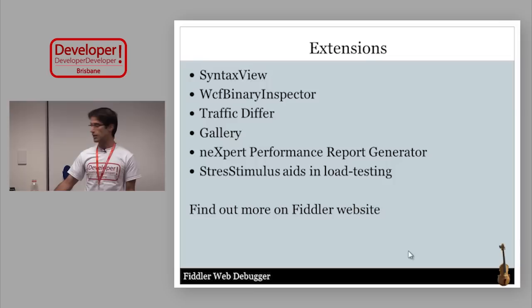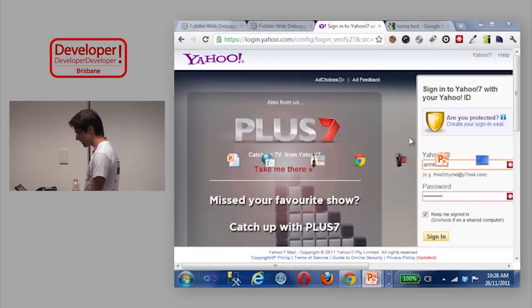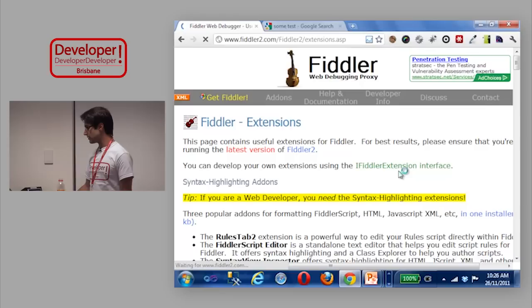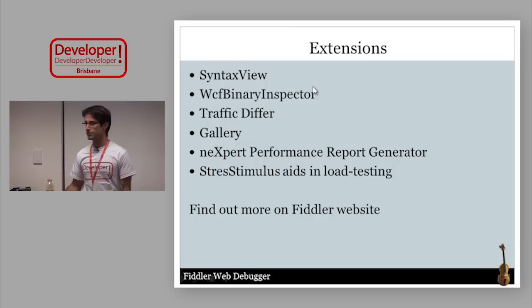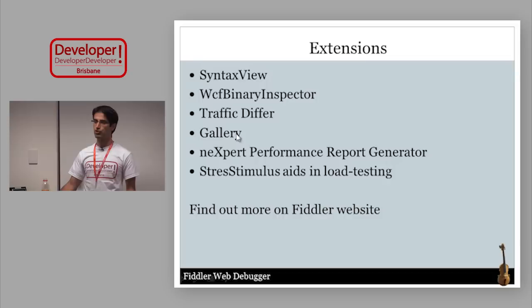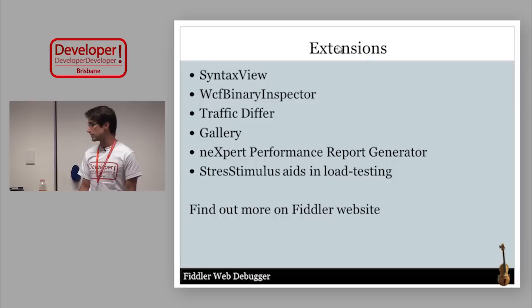Fiddler comes with many extensions and is very extensible — you can write your own or use existing ones from the Fiddler website. Notable add-ons include: SyntaxViewer for syntax-highlighted response bodies, WCF Binary Inspector for WCF HTTP binding traffic, Traffic Differ for comparing two full traffic profiles, a Gallery extension showing all captured images, an Expertly Performance Report Generator for website performance monitoring, and Stress Stimulus for load testing (a paid product).